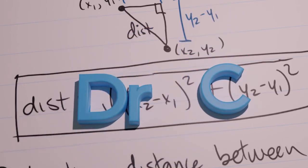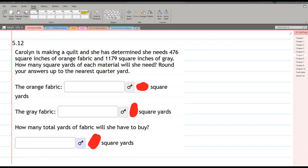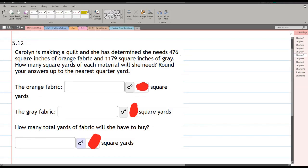In this unit conversion, we have to make a quilt and we start out with square inches as our units. 476 square inches and we have to turn it into square yards.